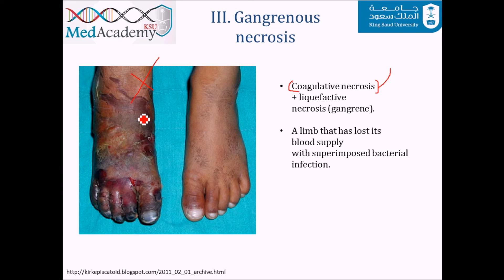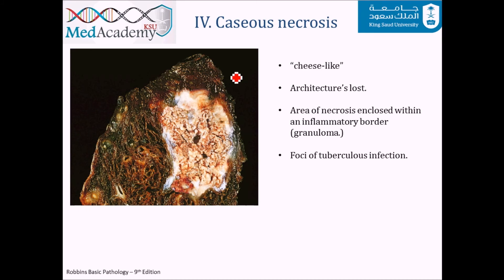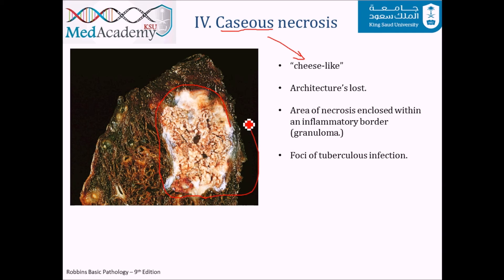Caseous necrosis means 'cheese-like.' The area of necrosis has a friable, yellow-white appearance and is not firm like coagulative necrosis. To remember caseous necrosis, associate three words: cheese-like, granuloma, and tuberculosis. It represents a loss of architecture confined within a border of inflammation called a granuloma. The surrounding lung tissue is not affected. This pattern is very characteristic of tuberculosis.